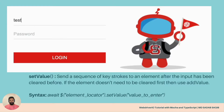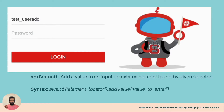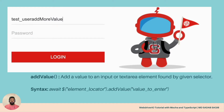Then we have addValue. What addValue does is — whatever data is already available in the field, it adds new text on top of it. So if something is already existing in the box, it's not going to clear it; it will add on top of that. The syntax is: await $('locator').addValue('value to be entered').